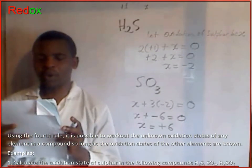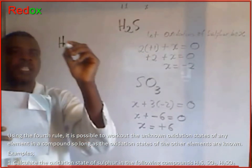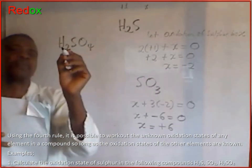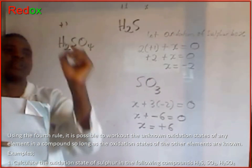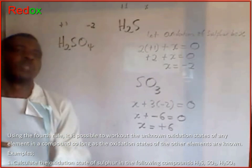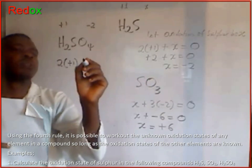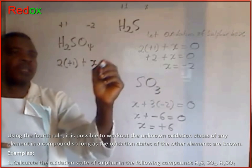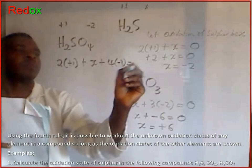Now let's do sulfuric acid, H2SO4. The oxidation state of hydrogen is plus 1, and the oxidation state of oxygen is minus 2. This gives us 2 times plus 1 plus x plus 4 times minus 2 equals 0.